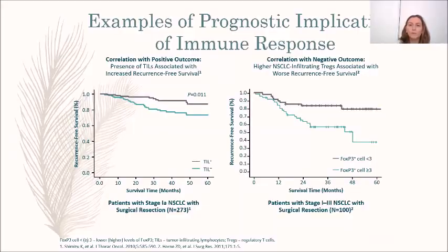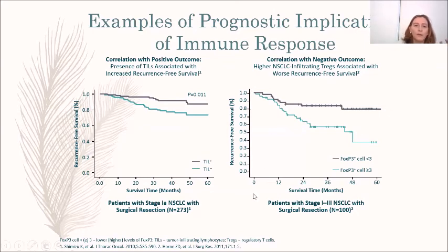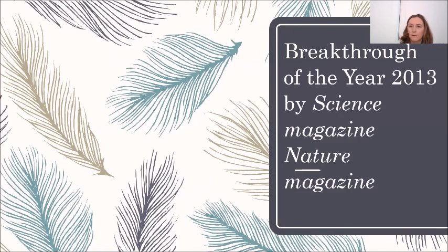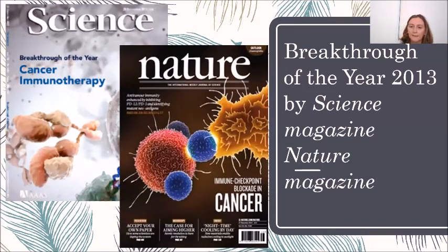We can see in this picture that the presence of intratumoral lymphocytes correlates with positive outcomes, while the presence of regulatory T cells in the tumor correlates with negative outcomes. These two molecules — PD-1 and CTLA-4 — were the breakthrough of the year in 2013 in both Science and Nature magazines.